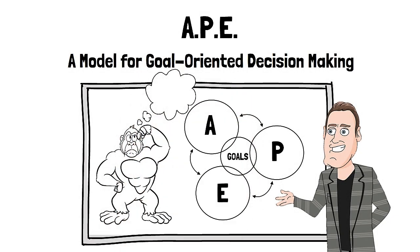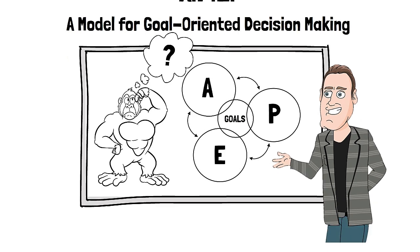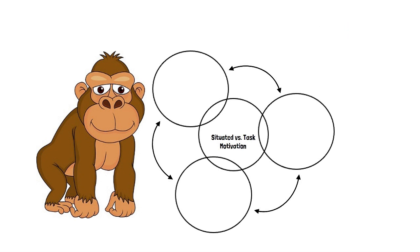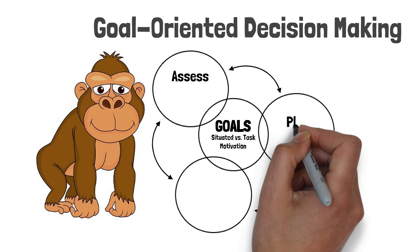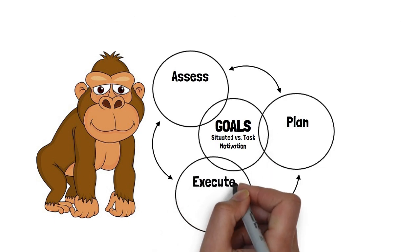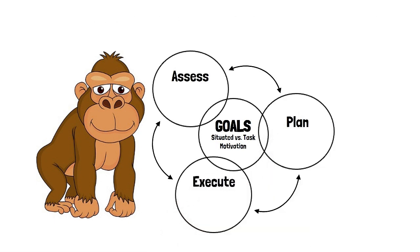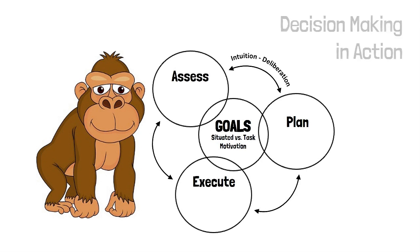In working towards our goals, how do we experience decision-making, and how can you use this experience to improve performance? For answers, we can turn to the APE model and the concept of goal-oriented decision-making. With APE, goals are a central feature, requiring motivation as we assess, plan, and execute. Each component can be experienced at an intuitive level as well as through conscious deliberation. Taken as a whole, APE is a natural model that describes how we experience decision-making in action.